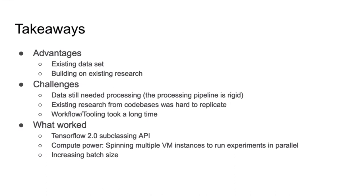What worked for us: TensorFlow 2.0 has the subclassing API, which allows us to do multiple experiments pretty quickly in some sense. The second, kind of obvious, but you know, throwing more compute power and just spinning multiple VM instances and doing multiple experiments in parallel definitely helped. And the third part, which was surprising to us, just increasing the batch size helped a lot. And not just that—increasing the batch size and the initializations helped quickly change the loss.